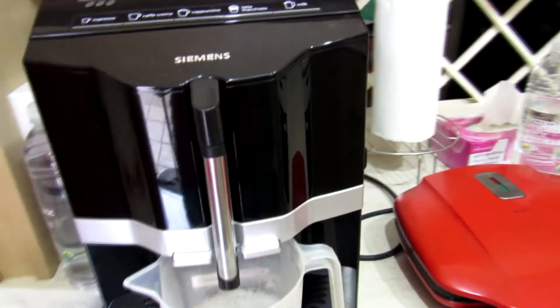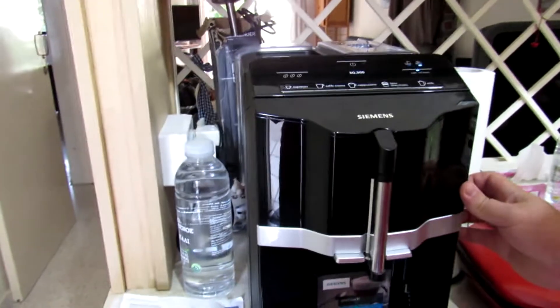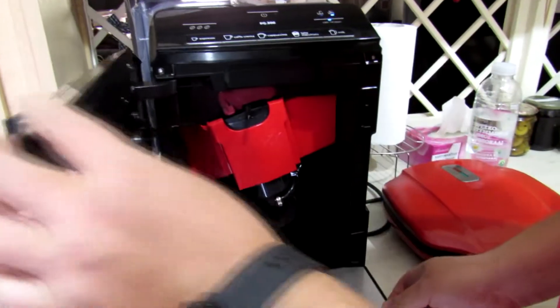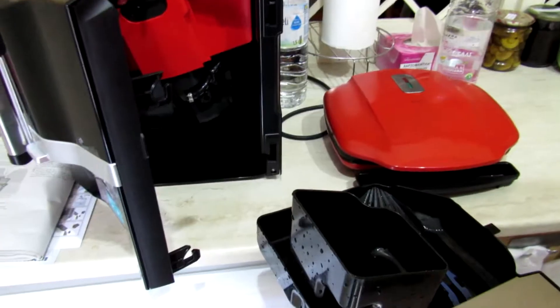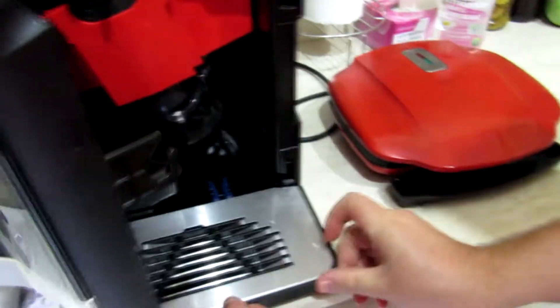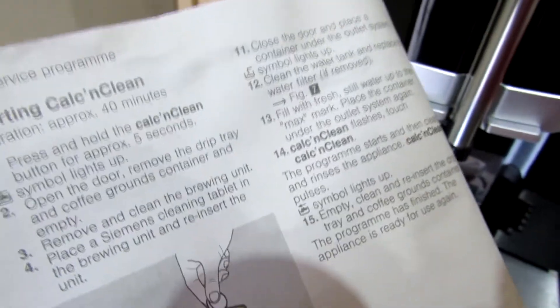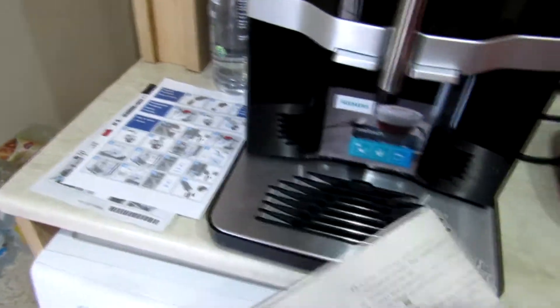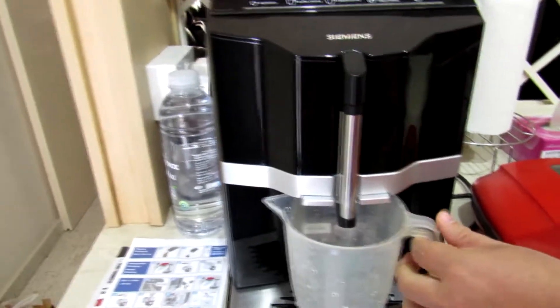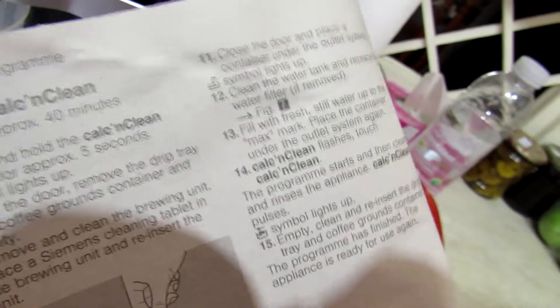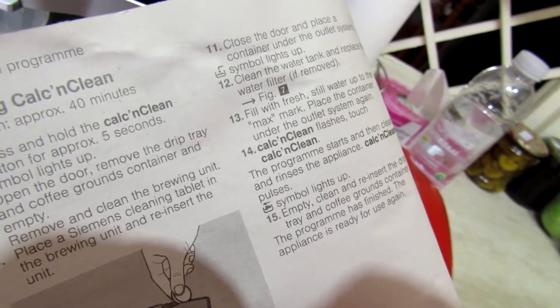Stage 10: Empty the container, open the door, empty the drip tray and grounds container. Close the door. Stage 11: Place the container under the outlet system. Clean the water tank and replace the water filter if removed.